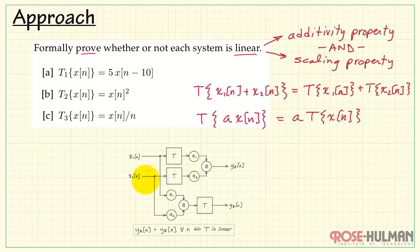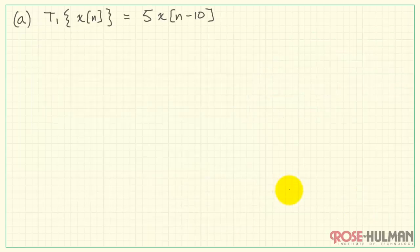In a similar way, we can pre-scale and then add, pass that through the system, and form YB. Then we ask ourselves the question, is YA equal to YB? And if so, we say that system T is linear.